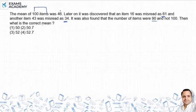Let me restate the question. 100 items' mean was 46. Later it was found that 16 was misread as 61 and 43 was misread as 34. Also, the total items were 90, not 100. So we need to find the correct mean.